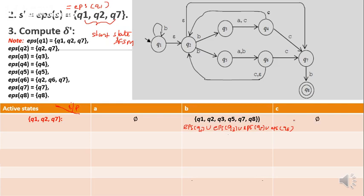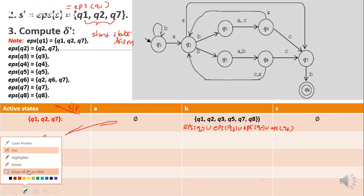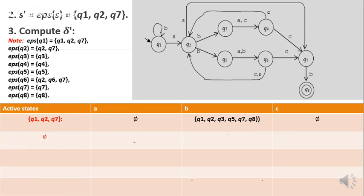Next, how to add the next state: always go on adding the states from each row. First include from this row, next include from this row, and so on, until you don't get a new state. Null is the new state I am going to get, so add it here. Null on all inputs will always be null.